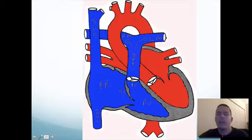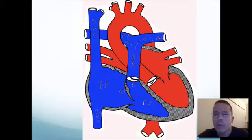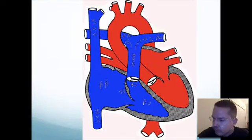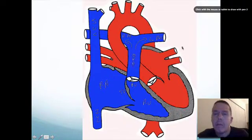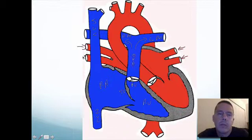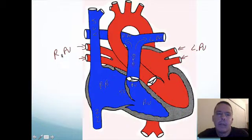The blood goes out to the lungs and it does something very important, but for the purposes of our talk today we're not overly concerned with what it does out in the lungs. It dropped off some CO2, picks up some oxygen. But then the blood comes back to the heart via the four pulmonary veins, and you have two pulmonary veins for the left side and the right pulmonary veins.